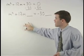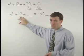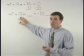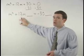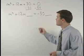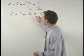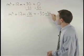In this case, that's half of positive 12, which is positive 6, squared, which is positive 36. So we add 36 to both sides of the equation.